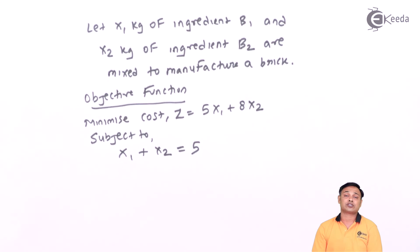This is called a strict constraint. A strict constraint is a constraint where you want an exact weight of the brick, neither more than 5 kg nor less than 5 kg.